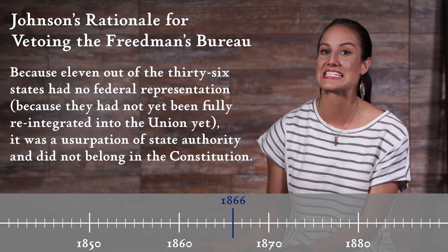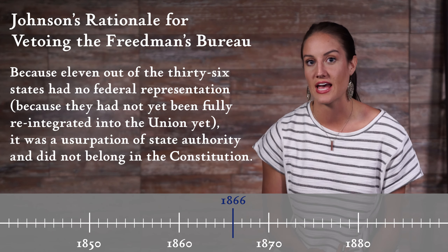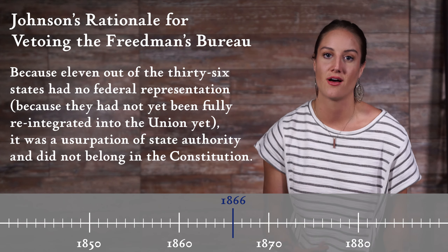Racism in the South had not gone away with emancipation and the end of the Confederacy. States began passing black codes, which limited Black freedoms. Fortunately, the federal Congress quickly noticed this and passed a civil rights bill, which Johnson promptly vetoed, stating that because 11 out of the 36 states had no federal representation — because they had not yet been fully reintegrated into the Union — it was a usurpation of state authority and did not belong in the Constitution. Then Congress passed a watered-down version of the Freedmen's Bureau, which Johnson again vetoed, but Congress was able to override his veto this time.